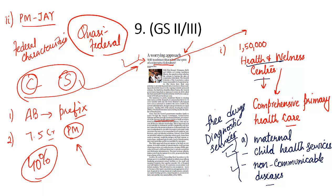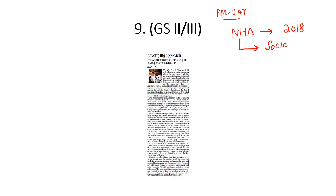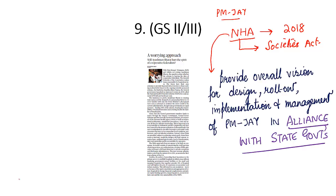What is the National Health Agency? For effective implementation of Pradhan Mantri Jan Arogya Yojana, an autonomous entity called the National Health Agency was constituted in 2018 — registered under the Societies Act. State governments are expected to similarly set up State Health Agencies to implement the scheme. The role of NHA is to provide overall vision for the design, rollout, implementation, and management of the scheme in alliance with state governments.